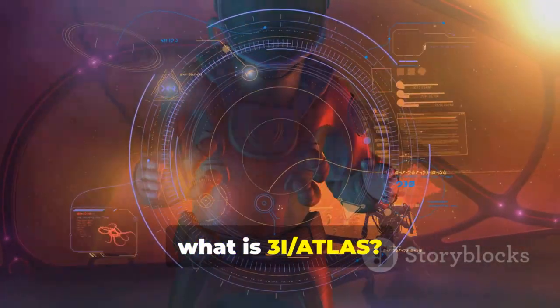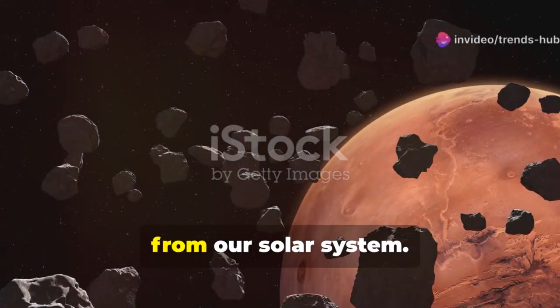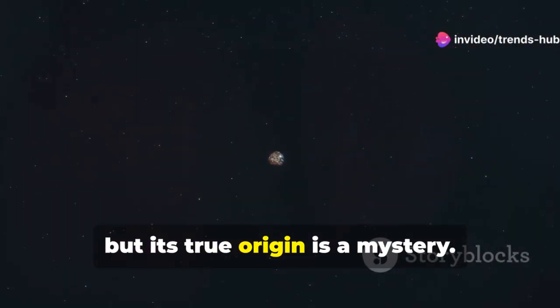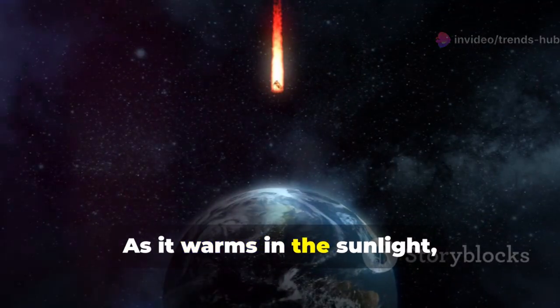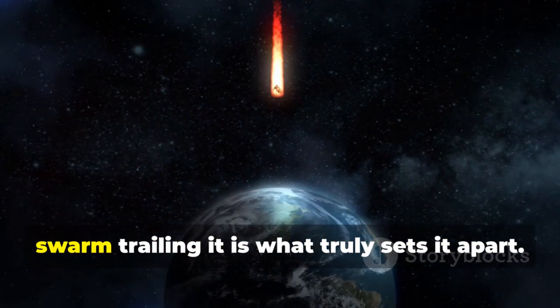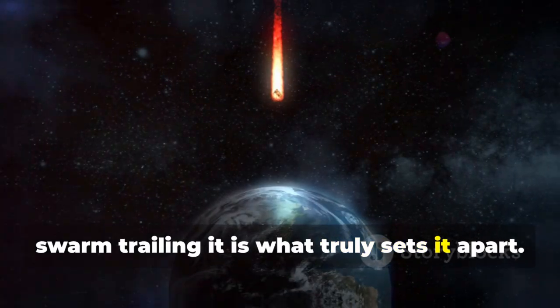What is 3i-slash-Atlas? Its hyperbolic trajectory proves it's not from our solar system. It came from the direction of Aquila, but its true origin is a mystery. As it warms in the sunlight, it sheds material, forming a faint coma and tail.